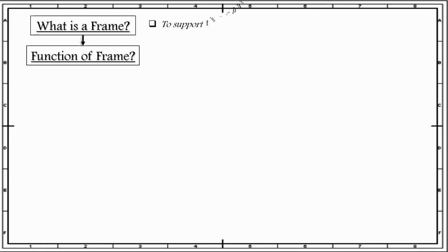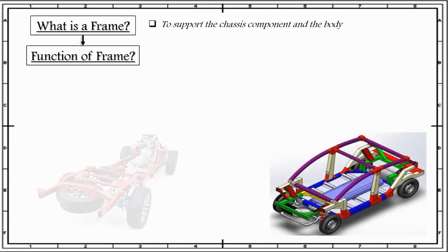Now, what are the functions of a frame? The first function is to support the chassis components and the body. The chassis components like engine, wheels, radiator, transmission system consisting of clutch, gearbox, propeller shaft, suspension systems, steering systems, brakes, fuel tank, etc., are all supported on the frame.